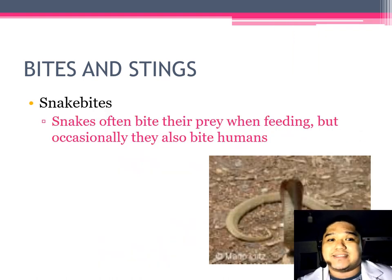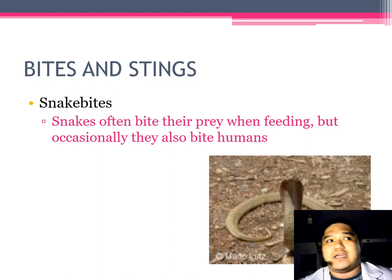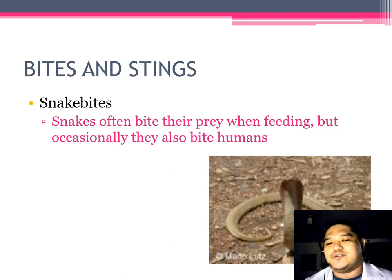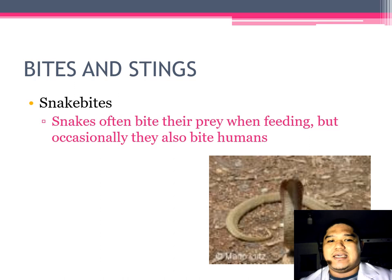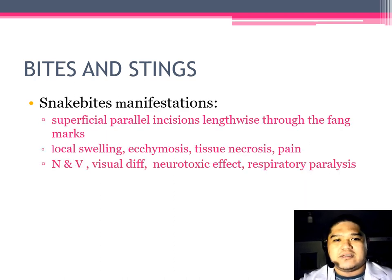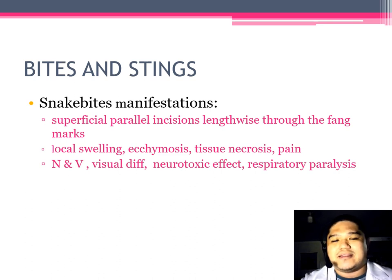Next would be snake bites. Snakes usually bite when feeding, but occasionally they bite humans. Not all snakes are venomous, but venomous ones include your rattlesnake and cobra, as shown in the image. Snake bite manifestations include a superficial parallel incision lengthwise through the fang marks, local swelling, ecchymosis, tissue necrosis, and pain. Nausea, vomiting, visual difficulty, neurotoxic effects, and respiratory paralysis could also be present.